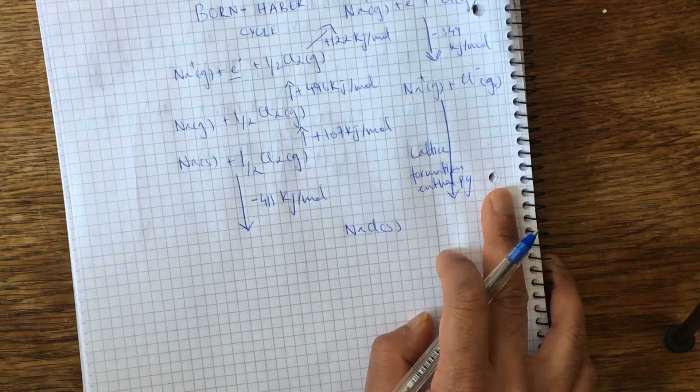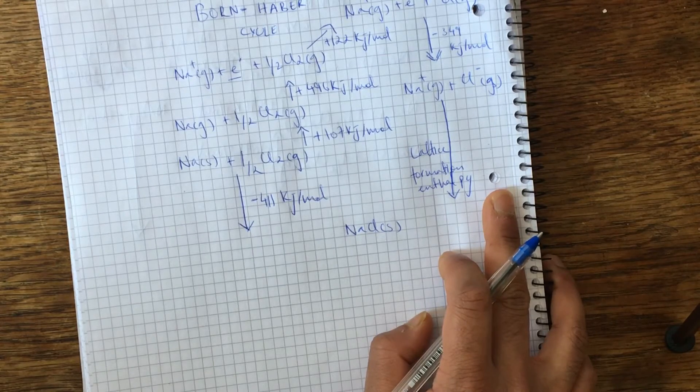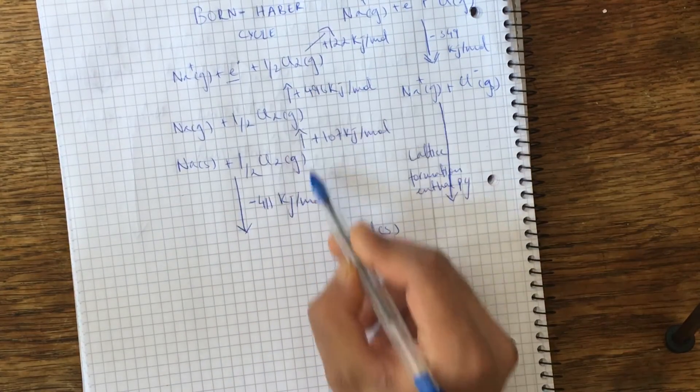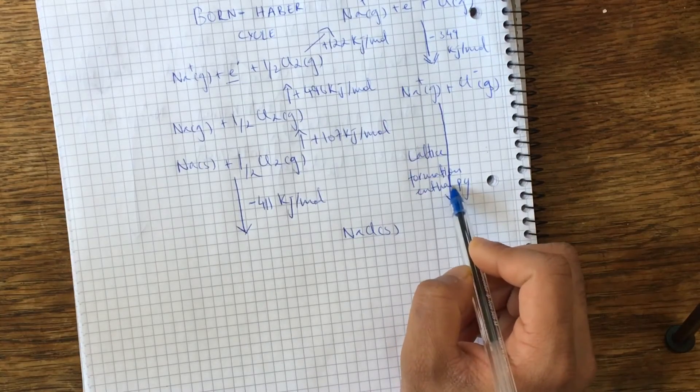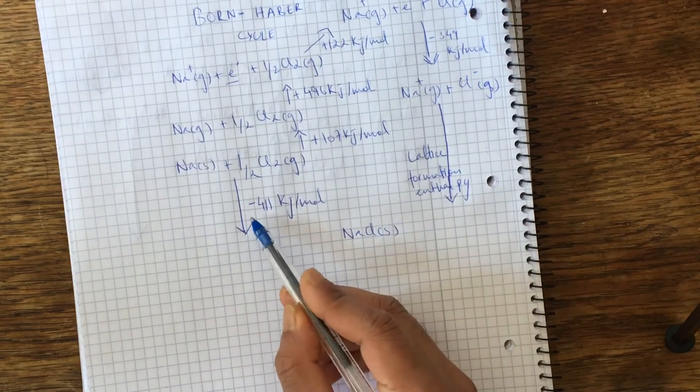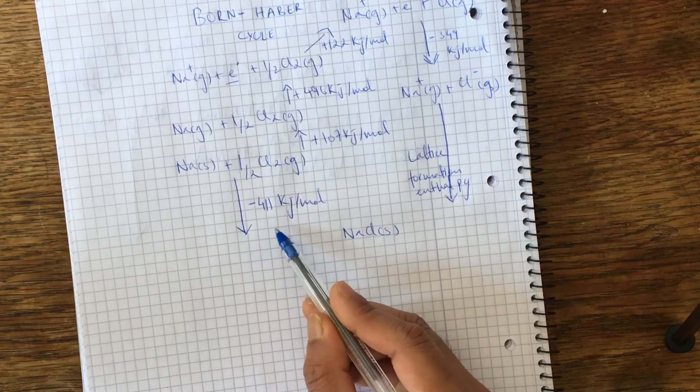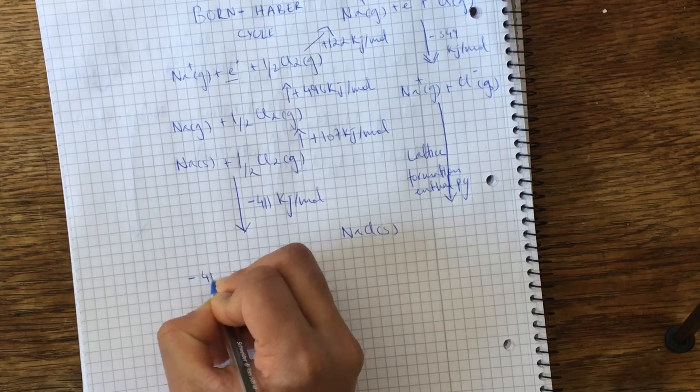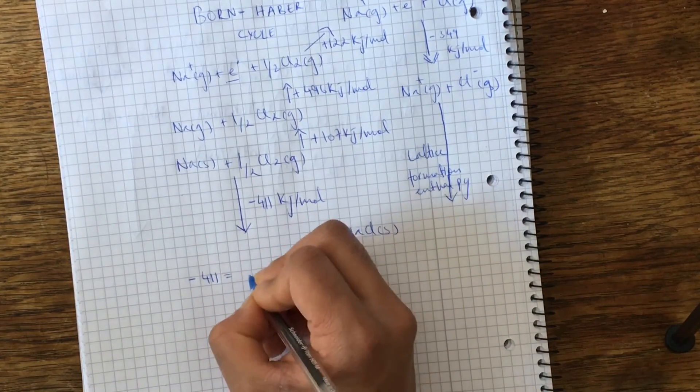And basically, now we just have to add the energies to know the lattice formation enthalpy. So basically, this entire reaction, this route of the reaction, is equals to this route, the direct route of the lattice formation enthalpy. So we're going to equate these energies to each other.